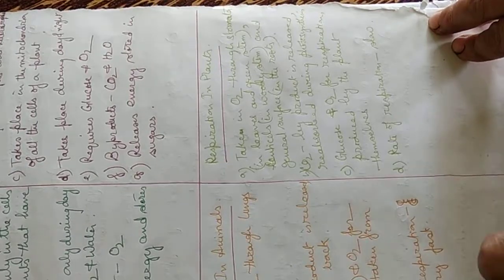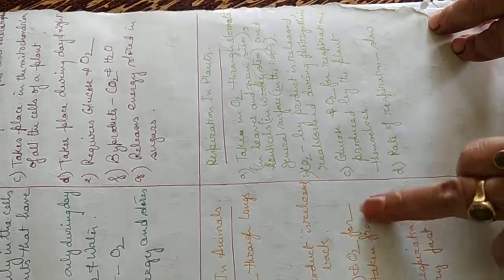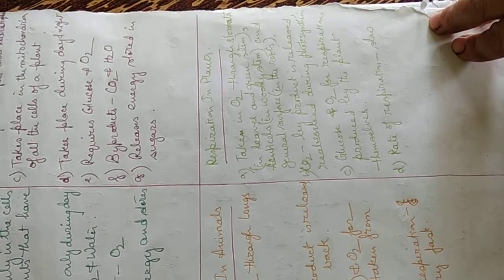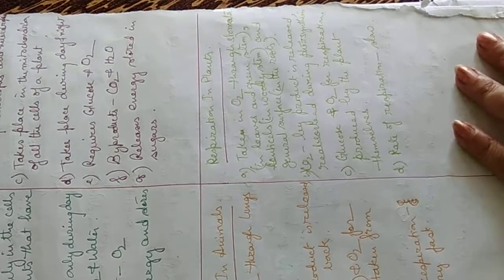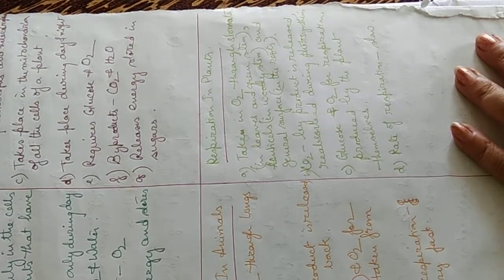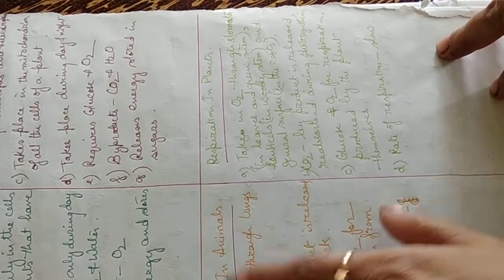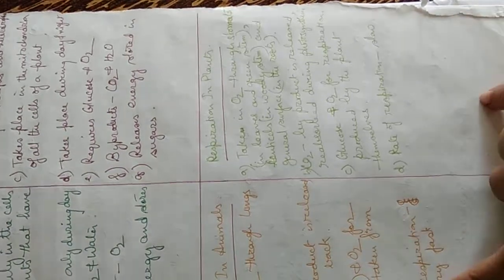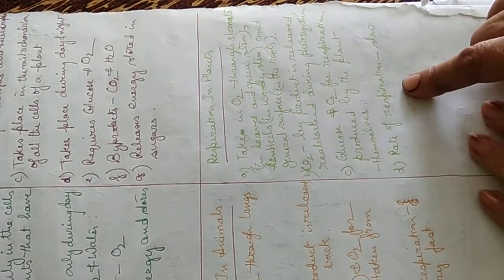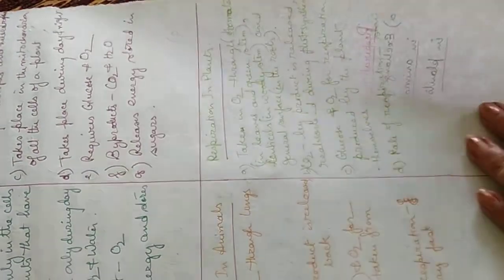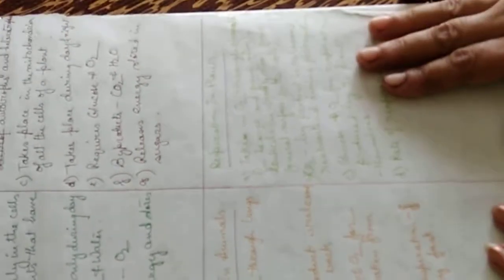In animals, glucose and oxygen for respiration are taken from outside; in plants, glucose and oxygen for respiration are produced by the plant themselves as they are autotrophs. In animals the rate of respiration is very fast, whereas in plants the rate of respiration is very slow. This concludes the respiration chapter; questions and answers will be discussed in the next video.